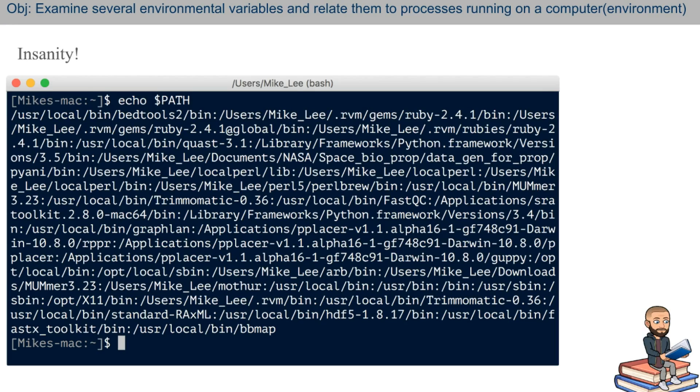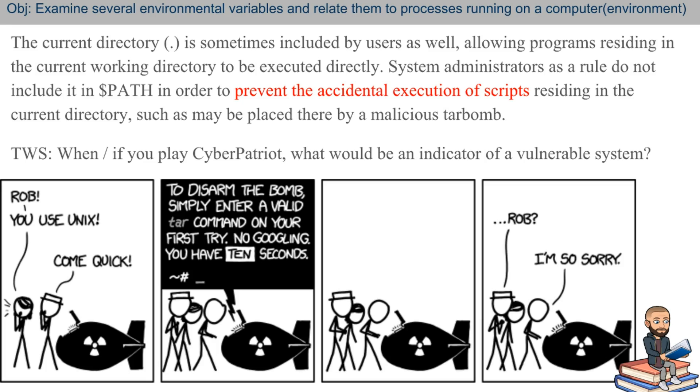Some people's path is insane as you can see here. There's too many folders with too many executables. You can see like Perl is in here. He has something about NASA like Ruby is over here. I mean, this is just crazy. Now something to be aware of if you do like CTFs or you are interested in being on my CyberPatriot team, it says here that the current directory that is the dot, this is sometimes included by users as well. What it does is it allows programs residing in the current working directory to be executed directly. A lot of system administrators do not include this in the path in order to prevent the accidental execution of scripts. These scripts can be maliciously placed by somebody and you don't want to find yourself with a tar bomb on your computer. There's a great XKCD comic about a tar bomb. But seeing how this is a vulnerability, if you play games like CyberPatriot, that might be a red flag if you see the current directory inside the path.